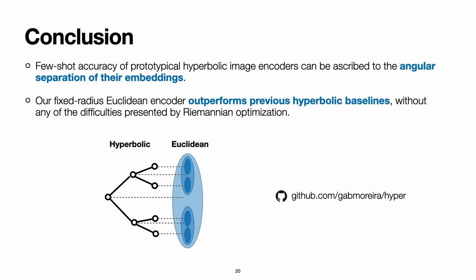In addition, we showed that just a fixed-radius Euclidean encoder can actually outperform these hyperbolic representations without any of the difficulties presented by Riemannian optimization on a negatively curved manifold.